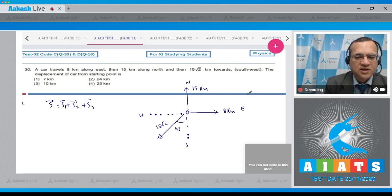If I pick up this is i and this is j, then this displacement is 8 of i, this displacement is 15 of j. And the third displacement will take the components 15 root 2 cos 45, this comes to be 15, and 15 root 2 sine 45, this comes to be 15.